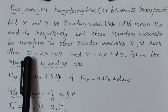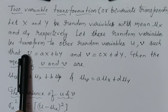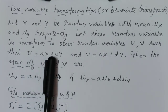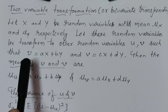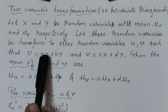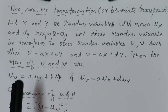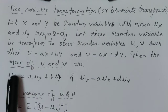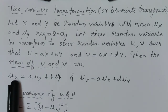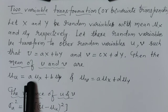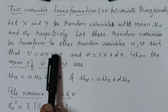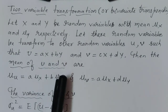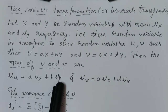To find the mean of u — that is, the expected value of u — since expectation is linear, we write E[u] = a·E[x] + b·E[y]. Therefore, mu_u = a·mu_x + b·mu_y. Similarly, for v = cx + dy, the mean value of v is c·mu_x + d·mu_y.